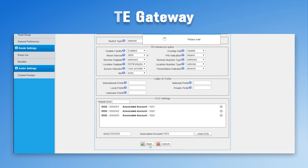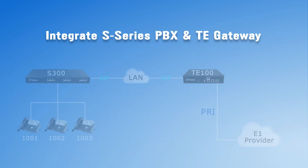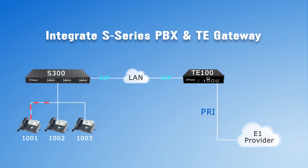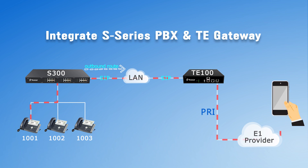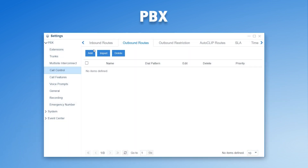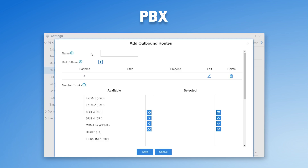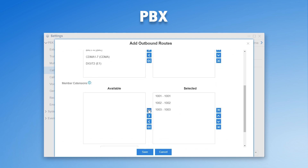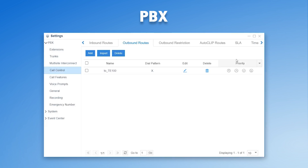Then we need to configure the routing. If we want extension users of the PBX to make outgoing calls through the E1 trunk connected to the gateway, we need an outbound route for the peer trunk we've created on the PBX. Don't forget to select all of our extensions. Now, all outgoing calls from the PBX will be sent to the gateway.